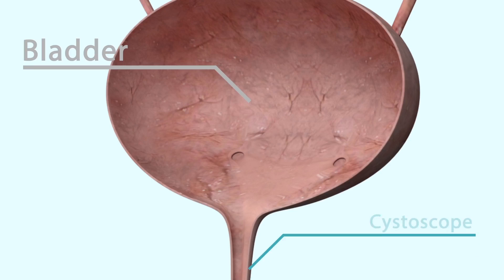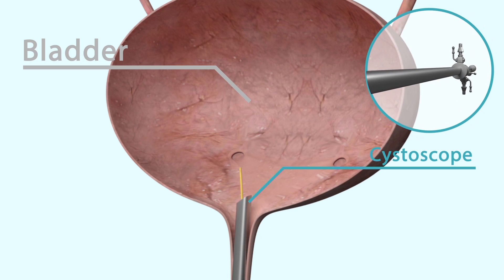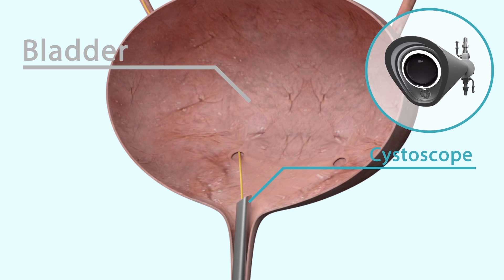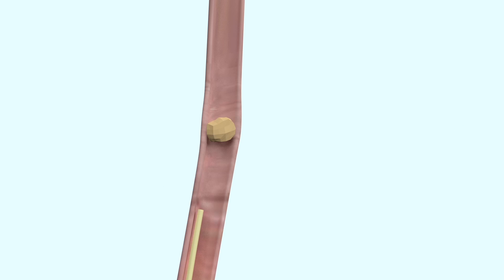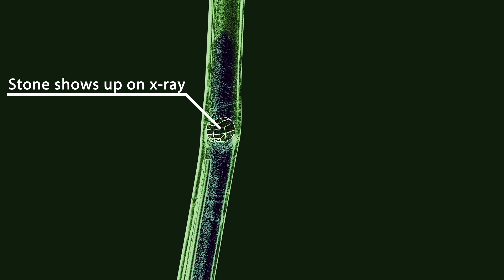A cystoscopy is first carried out to examine the bladder. A small catheter is inserted into the opening of the ureter and dye is injected through the catheter to outline the obstruction. In this case it is due to the stone.